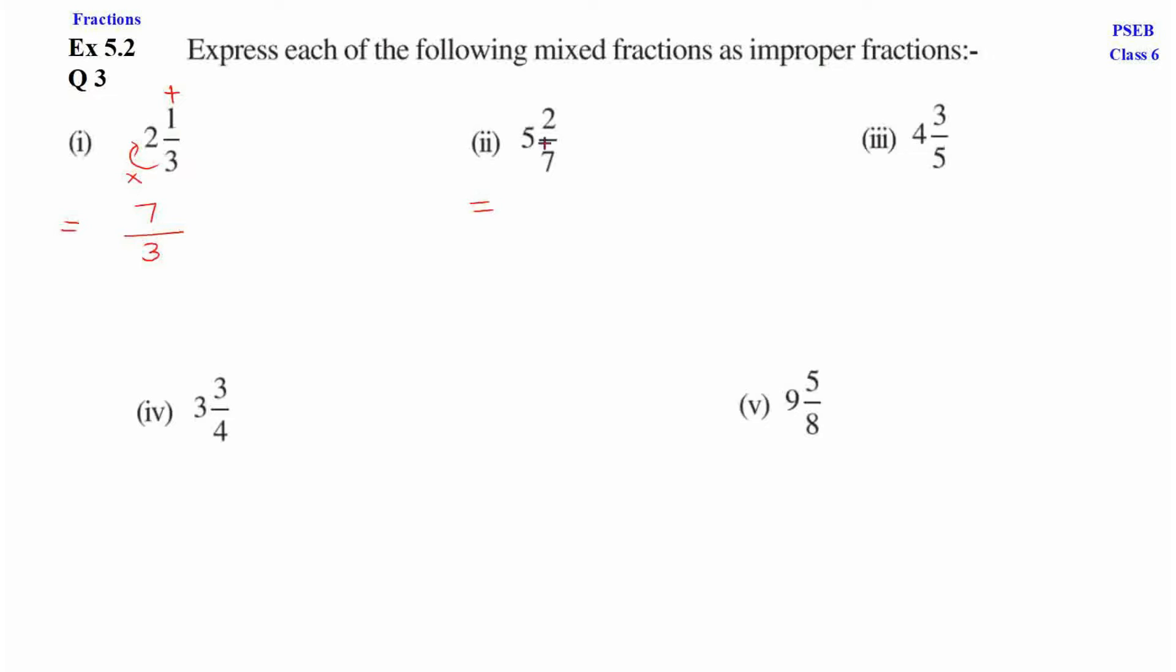Second part. 7 into 5. This is the numerator. Add 2. So, 7 into 5 is 35 plus 2 is 37. This is the numerator. Upon denominator, it will be same. So, 37 upon 7.